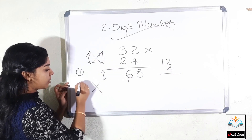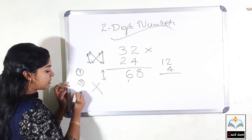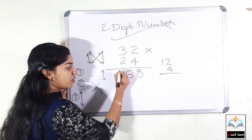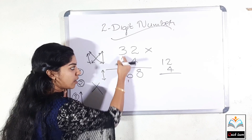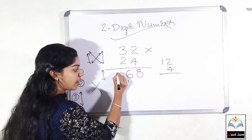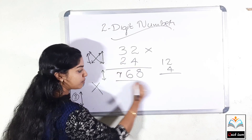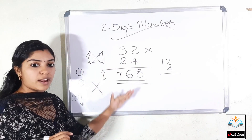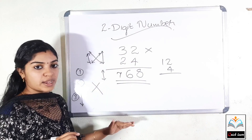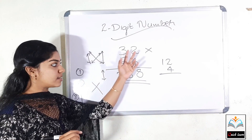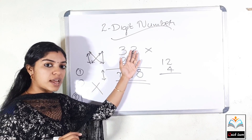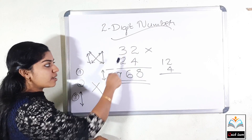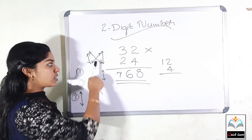First step, second step, and third step. In the middle of the third step, multiply the sixth step, and the remainder of the fourth step is the seventh step. Now we are going to do the same steps.